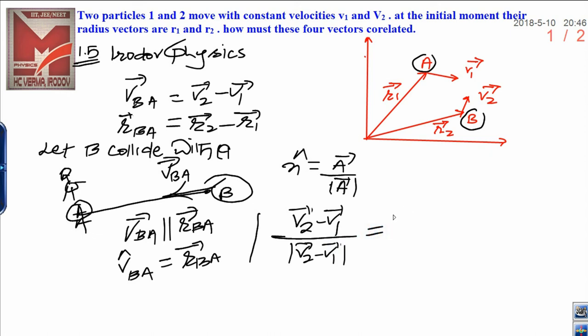Similarly, if they are parallel, they might be equal. Then you can write rBA means r2 vector minus r1 vector divided by magnitude of r2 vector minus r1 vector.